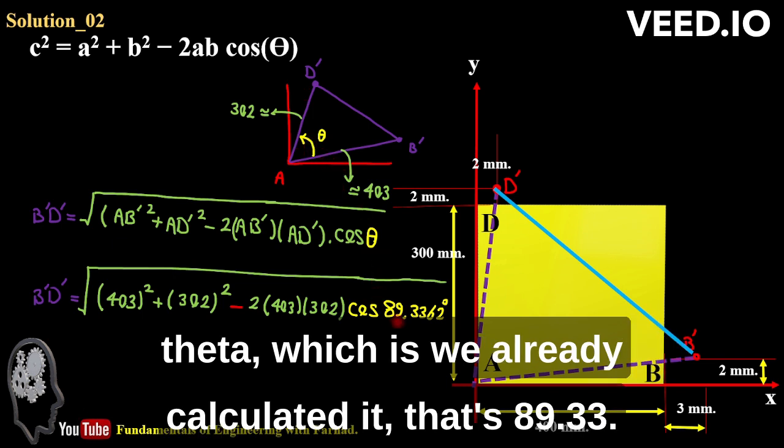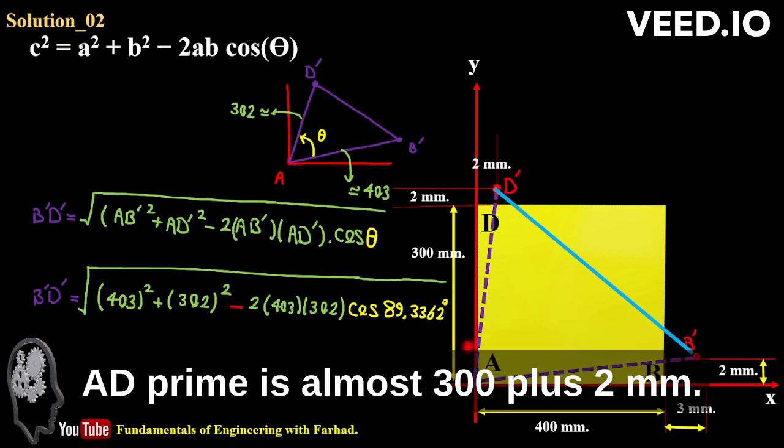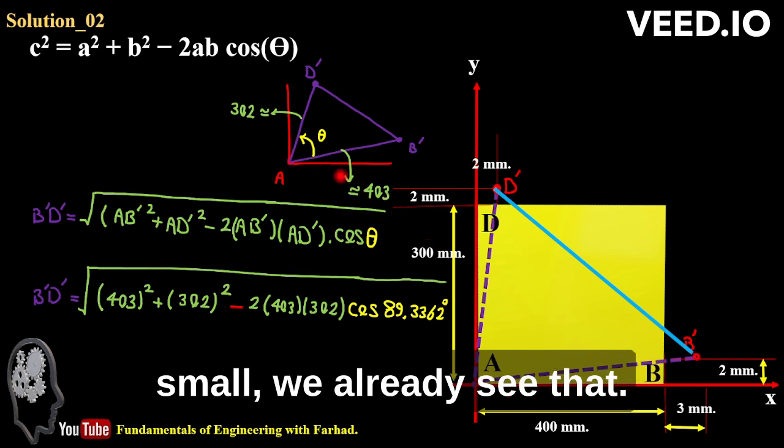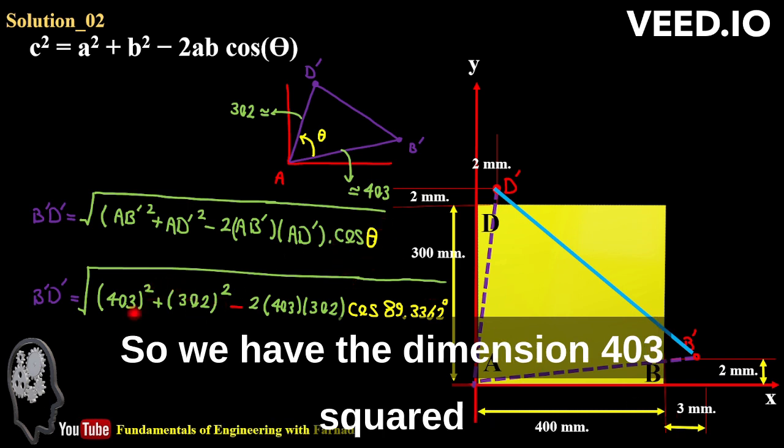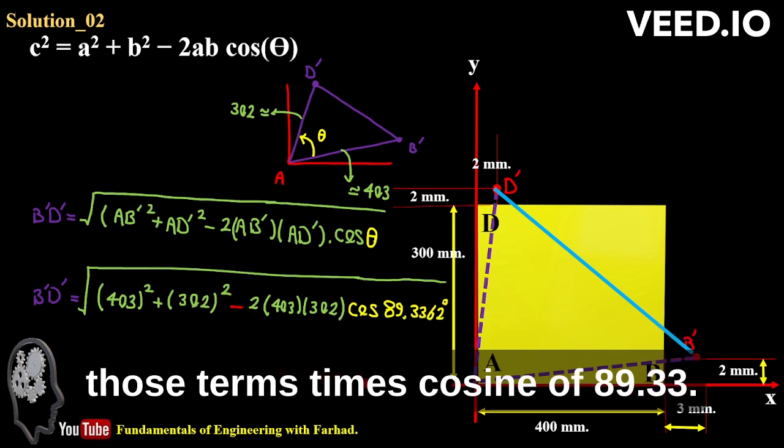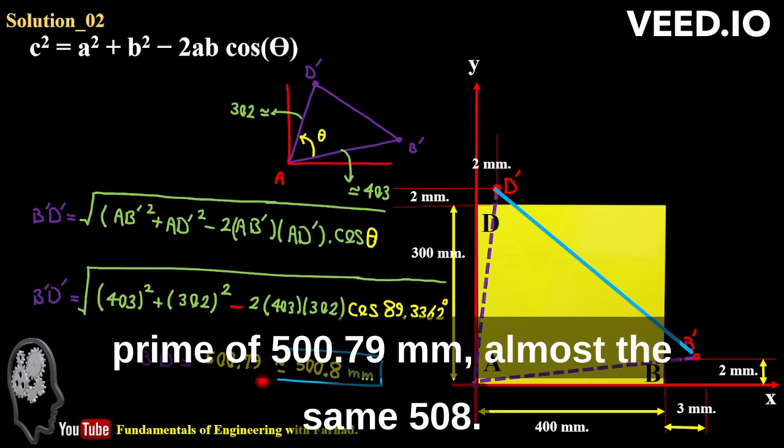That's 89.33 and one can say a d prime is almost 300 plus 2 millimeters because this angle is pretty small. We already see that. And also this one is 400 almost plus 3 millimeters. So we have the dimension 403 squared plus 302 squared minus 2 times those terms times cosine of 89.33. It just gives you b prime d prime of 500.79 millimeters, almost the same as 508 millimeters.